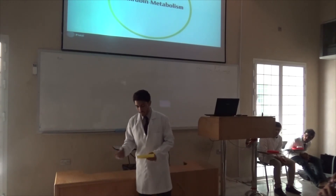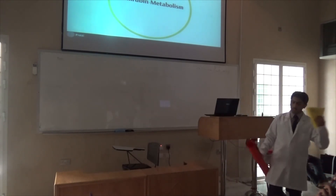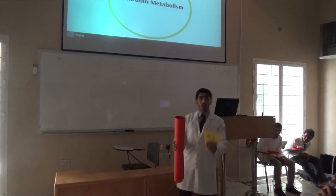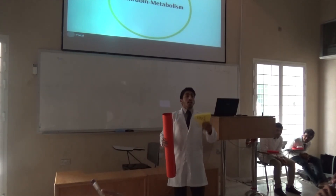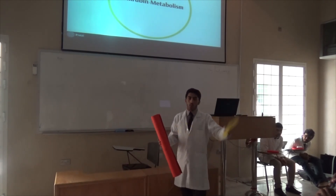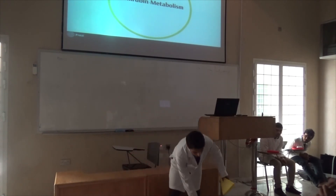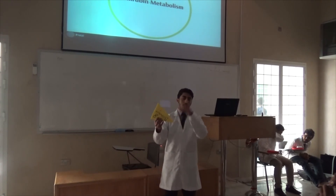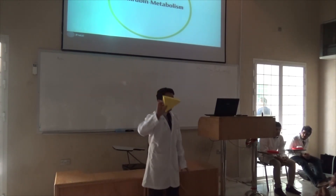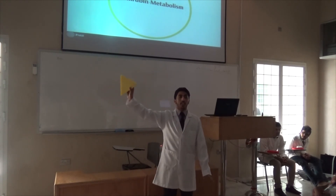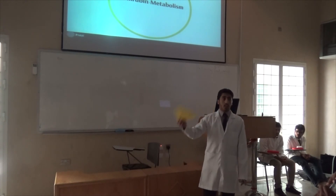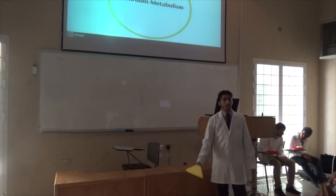Then 10 to 15% of urobilinogen goes through the portal vein. When it goes to the portal vein, 5% of it enters the enterohepatic cycle and is re-secreted into the common bile duct again with bile salts and other substances back into the liver. The remaining 5 to 10% goes to the kidney, still in the form of urobilinogen. When it reaches the kidney, it gets oxidized to produce urobilin, and this urobilin is the yellow color of the urine, excreted through urination. Thank you.